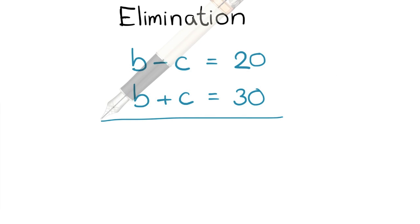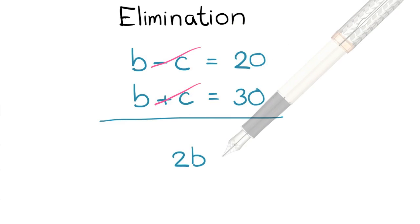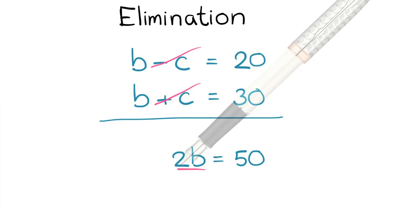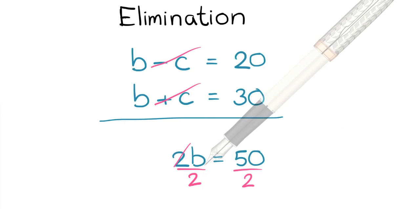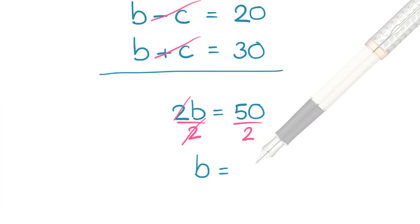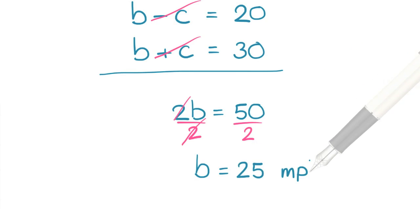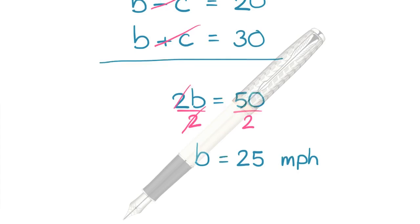By adding two equations, we eliminate c and we are left with 2b equals 50. Divide both sides by 2. We have b equals 25, that is the speed of the boat, 25 miles per hour in still water.